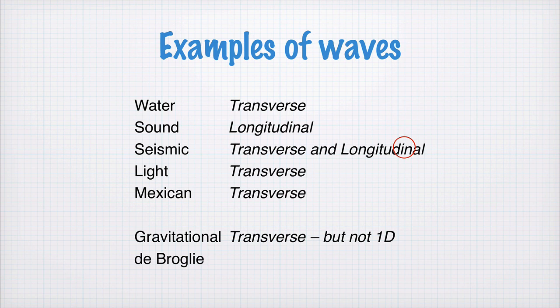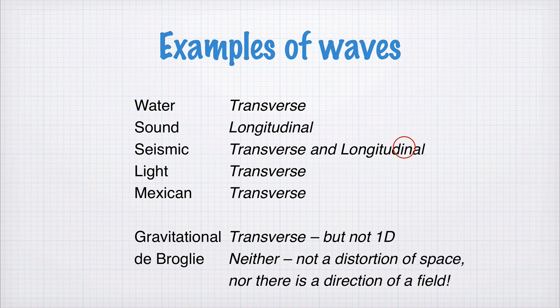Nor in fact is there any physical thing moving, like there's no water moving, there's no gas moving, there's no earth moving, there's no matter moving. So a De Broglie wave is neither. It's not a distortion of space and there's no direction of field. So a De Broglie wave is neither transverse nor longitudinal. It's something else.